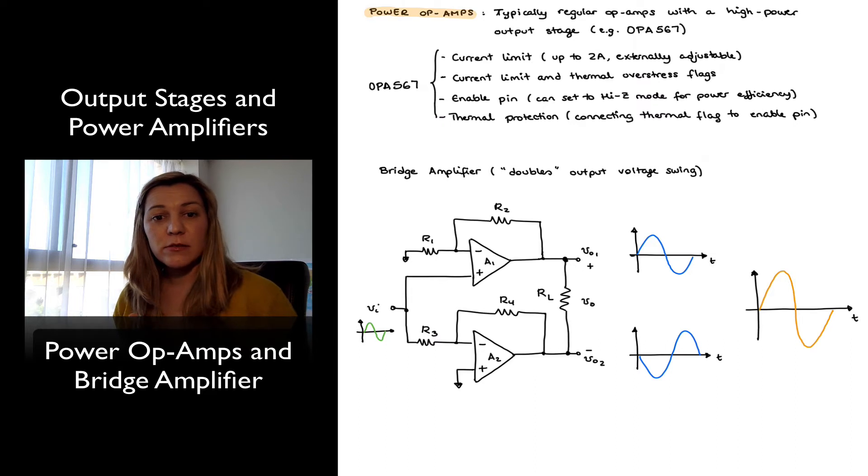A power op-amp is nothing more than typically a regular low-power op-amp with a high-power output stage. An example of a high-power op-amp I've listed there is Texas Instruments OPA567.